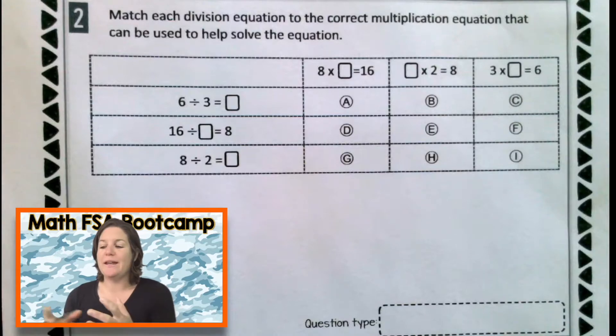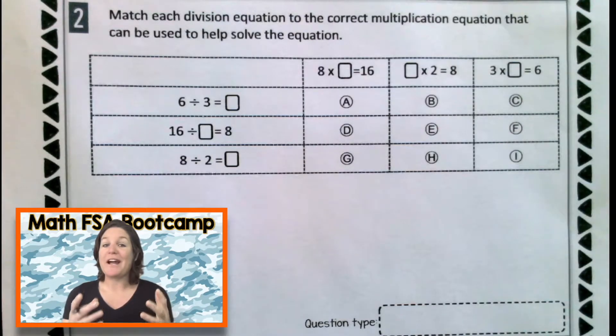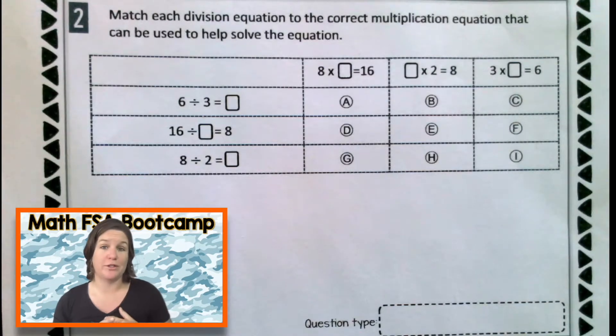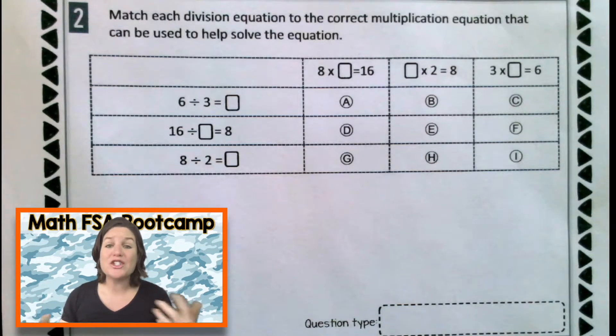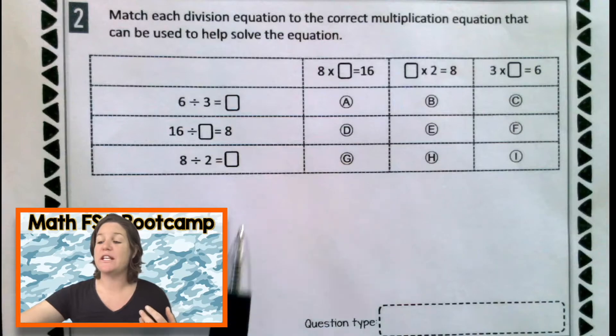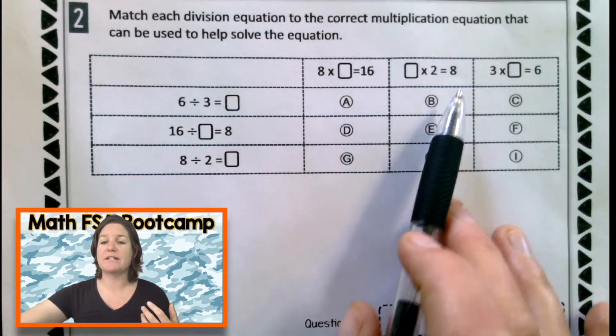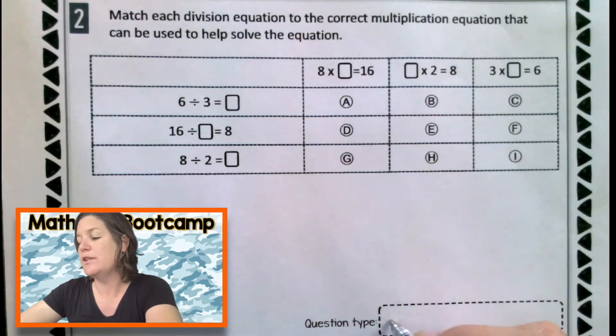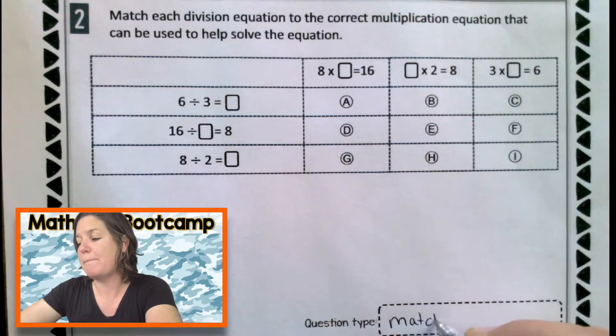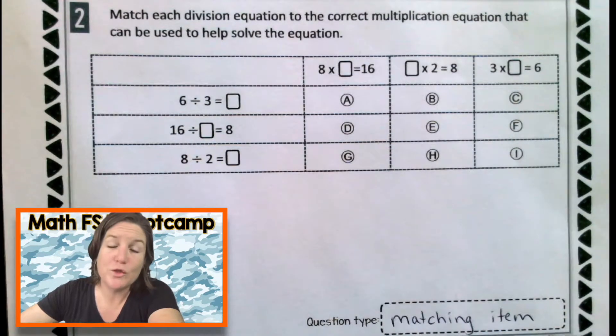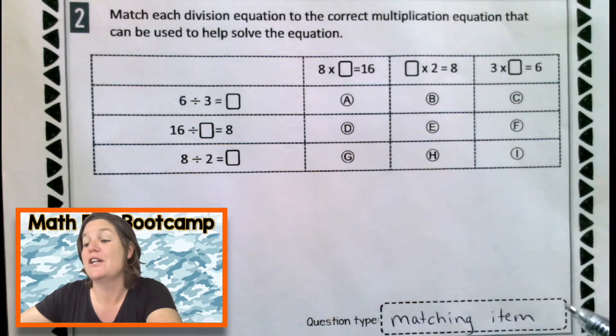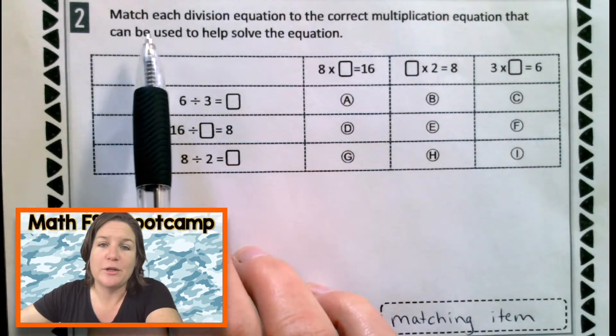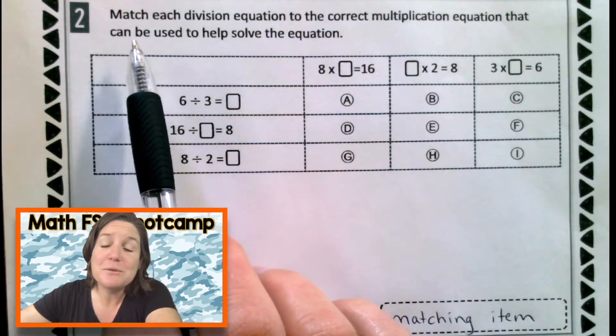Here we are with number 2, and I'm looking at it. And I want to identify the question type first. So what kind of question is this? Yeah, it's a matching item question. We're matching each row with the correct column. So if you did not already, jot down matching item. For those of you who have been watching this series, you know that matching items are one of my favorites. I actually like them all because I just love math. And I hope that you do, too.